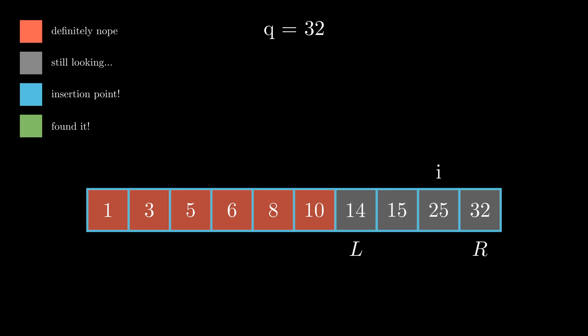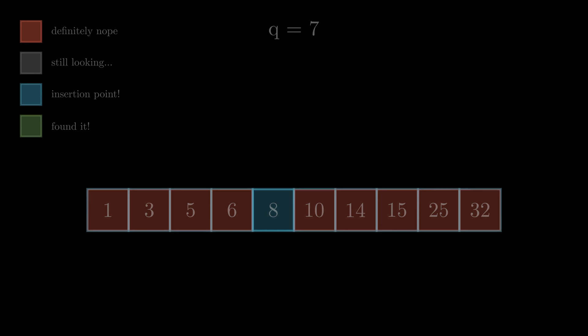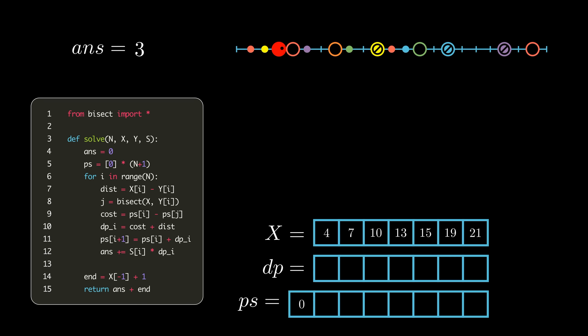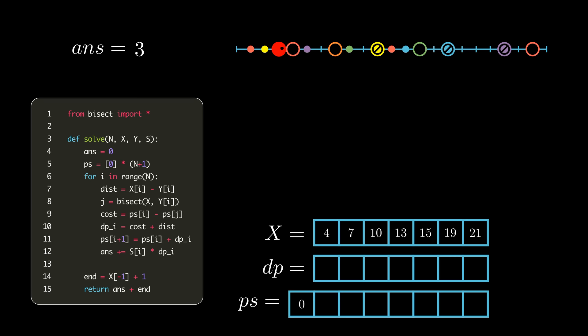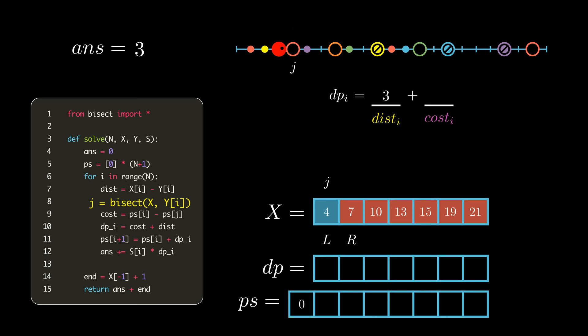To solve our new problem, we can apply a simple, yet surprisingly powerful classic algorithm, binary search. Since we're processing the portals in ascending order of entrance position, and we know the coordinates of our exit, we can binary search the entrances for the index J of the leftmost portal that would be included in our range.